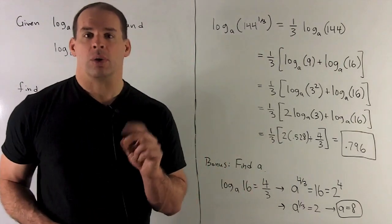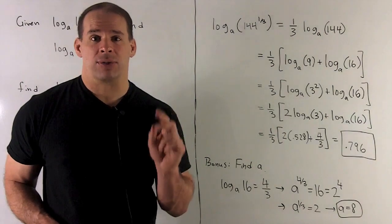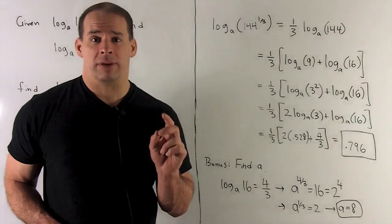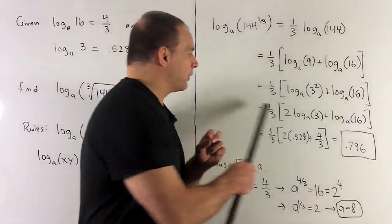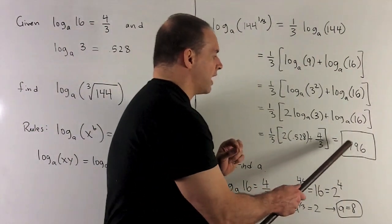If you notice, we're given log of 16, that's 4 3rds, and then log of 3 is going to be 0.528. So I have everything I need so I can crunch this down, and then I get 0.796.